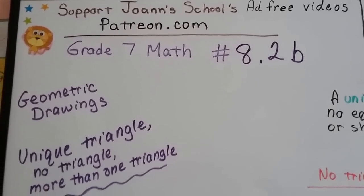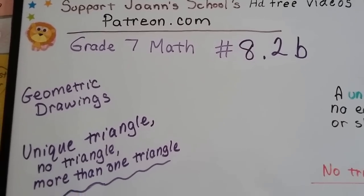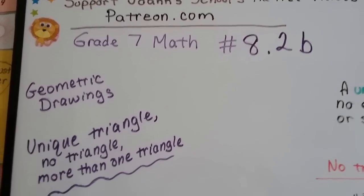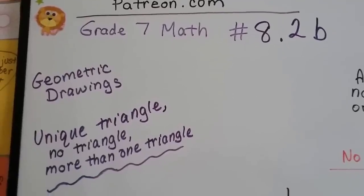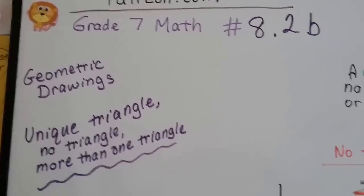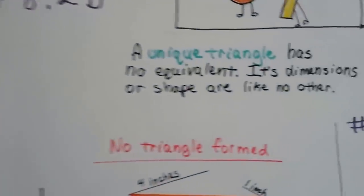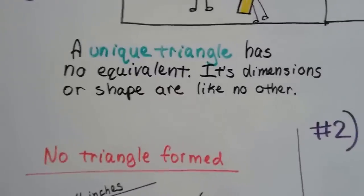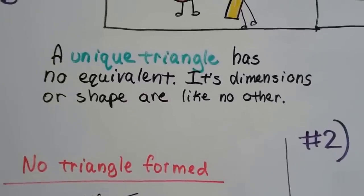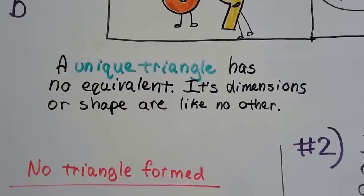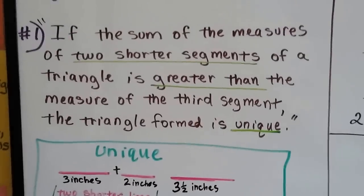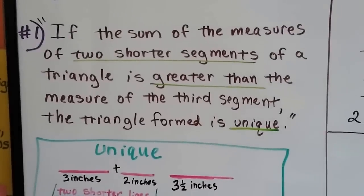Grade 7 math, 8.2b: geometric drawings — unique triangles, no triangle, more than one triangle. A unique triangle has no equivalent; its dimensions or shape are like no other. They're one of a kind.